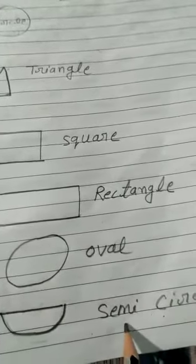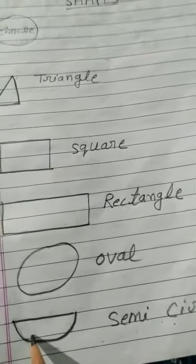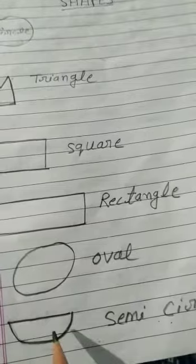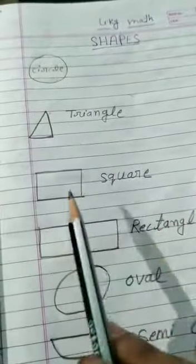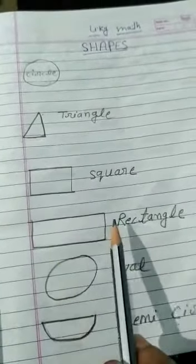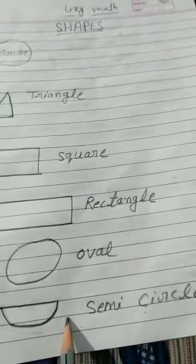Next, semicircle. What is this? This is semicircle. Half circle is semicircle. Once again: circle, triangle, square, rectangle, oval, and semicircle.